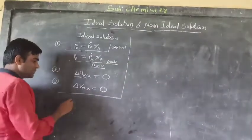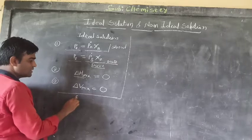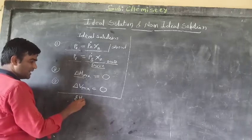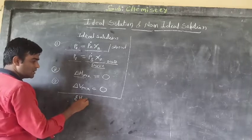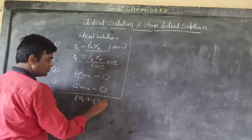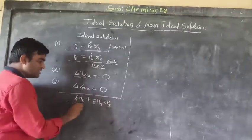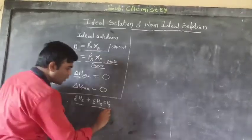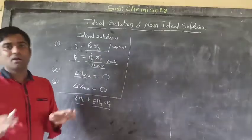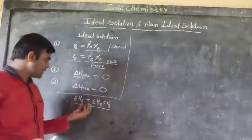For example, benzene (C6H6) plus toluene (C6H5CH3) — benzene and toluene form an ideal solution. This mixture follows all three conditions, so it is considered an ideal solution.